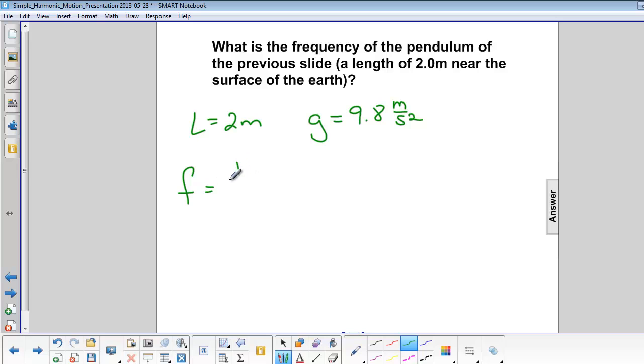Frequency is equal to 1 over 2π times the square root of g over L. That's 1 over 2π times the square root of 9.8 meters per second squared divided by 2 meters. That is equal to 0.36 hertz.